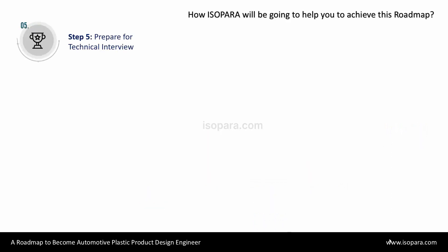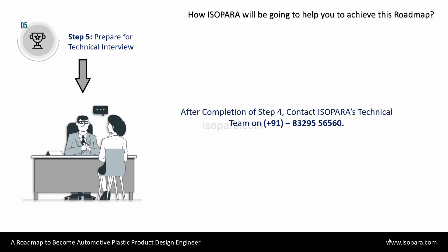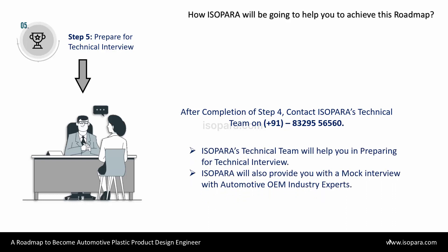Then step 4 is CAD Test Courses — each CAD Test Course contains 15 CAD tests to practice. Then the last step is step 5. For this step, give a call to the technical team of Isopara on the given number only after the completion of step 4. Isopara's technical team will help you in preparing for the technical interview. Isopara will also provide you with a mock interview with automotive OEM industry experts. This is how Isopara will help you to achieve these steps and in becoming an Automotive Design Engineer. To discuss more, feel free to contact the technical team. Thank you.